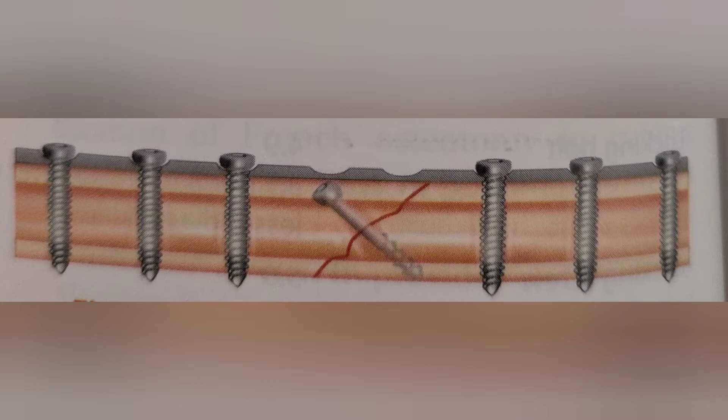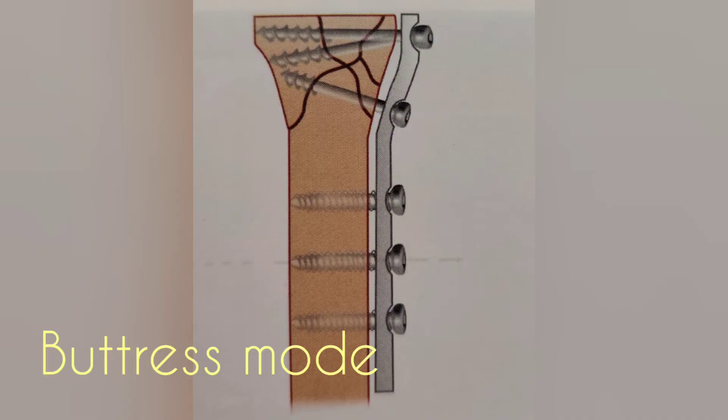Next is buttress mode of fixation. In buttress mode it will buttress the weakened area of bone and prevent the collapse of the bone during healing process. Mainly used for periarticular and intraarticular metaphyseal fractures.